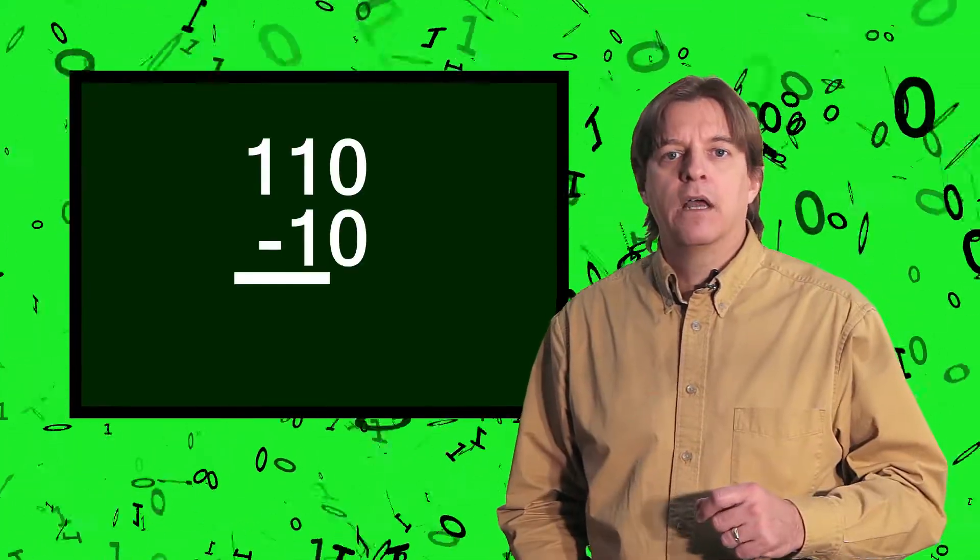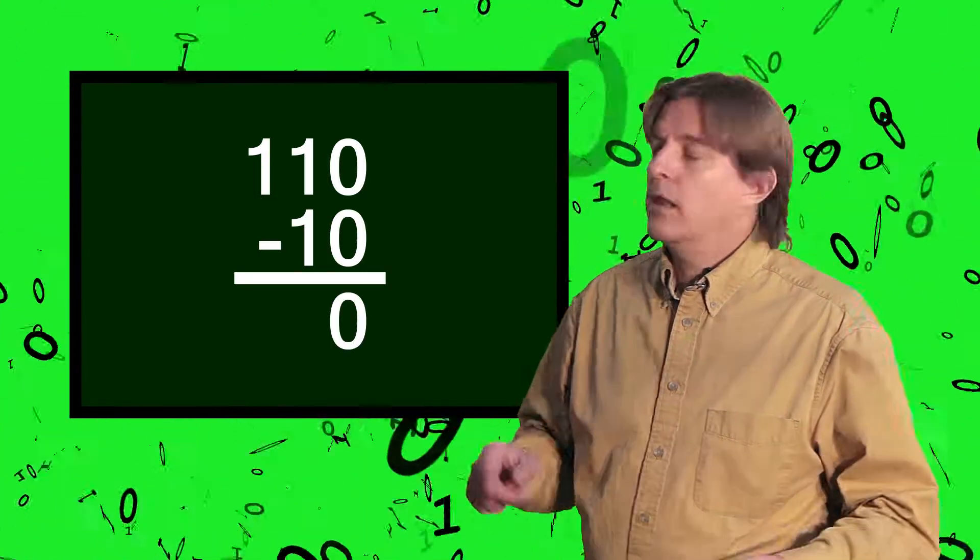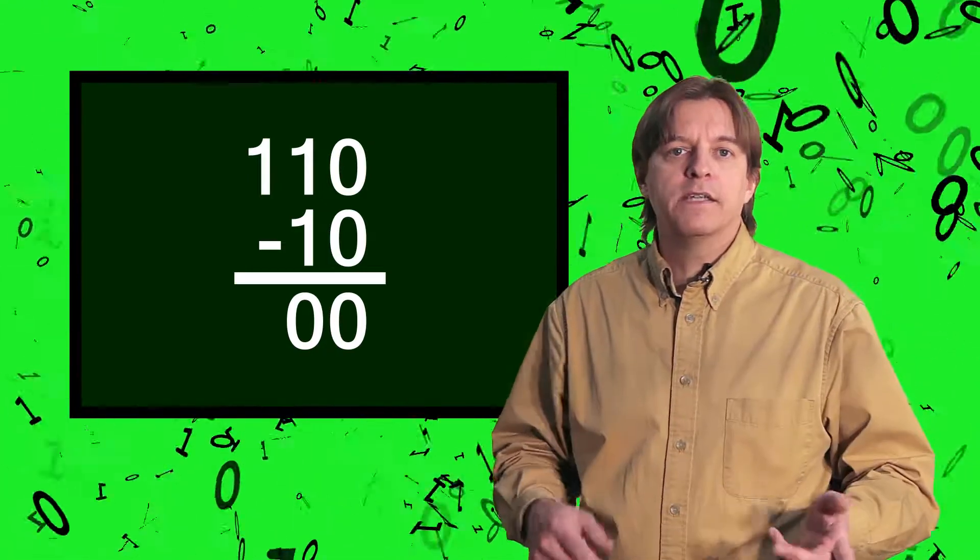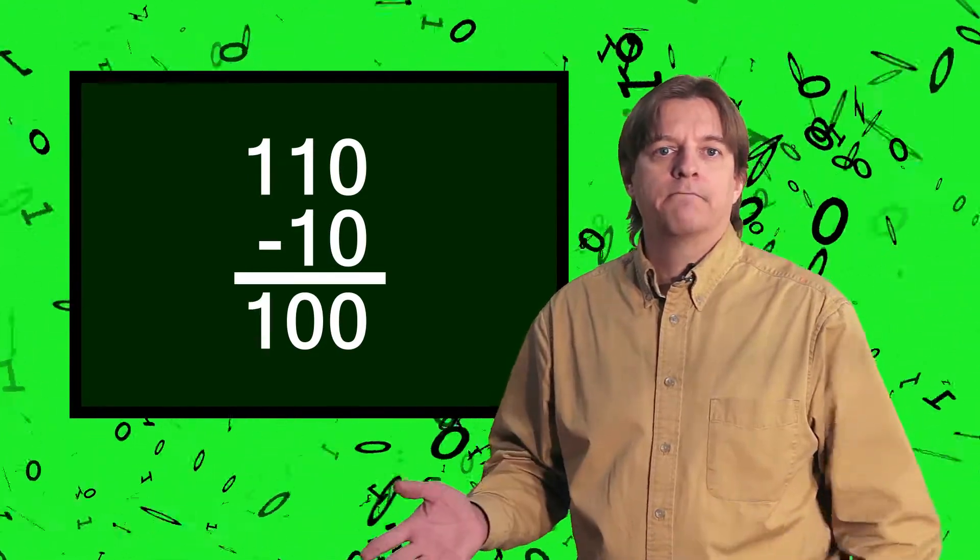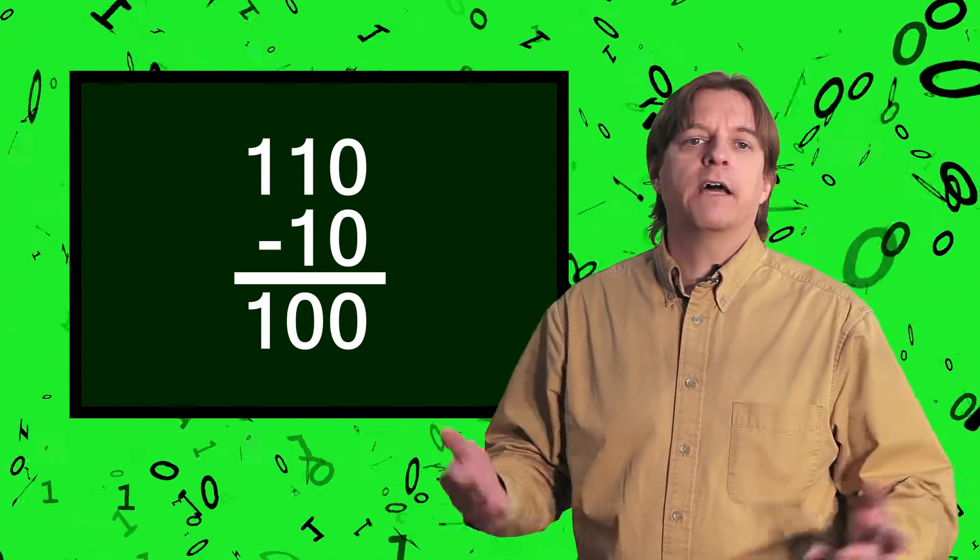Binary worked exactly the same way. Let's look at some examples in binary. First, something simple. 6-2. The units column is 0-0, which equals 0. The next column is 1-1, which equals 0 again. The final column is 1-0, giving us 1. This gives us an overall result of 1-0-0, or the value of 4.